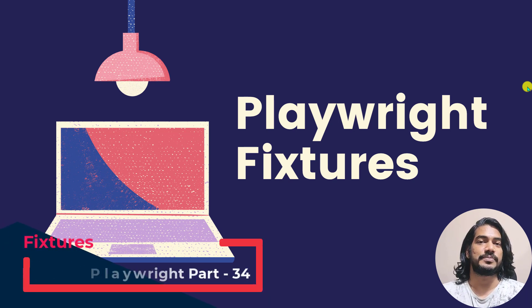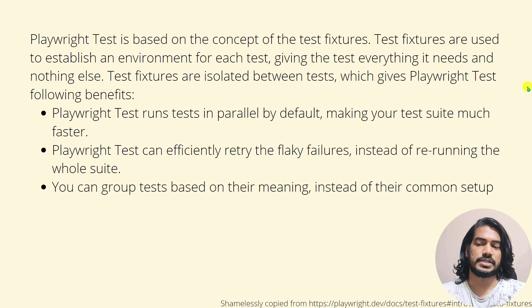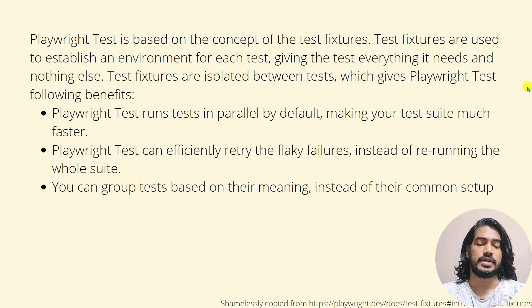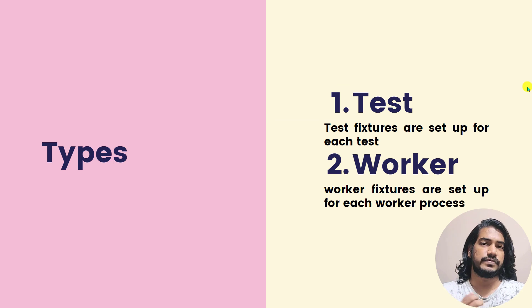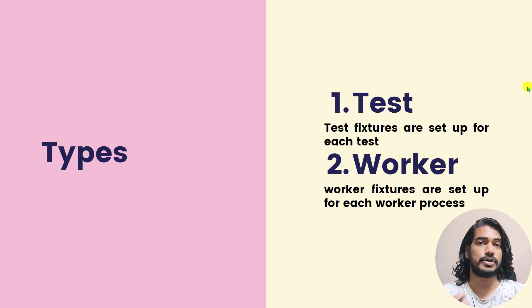Hey guys, my name is Kaushik and welcome back to LeetCode. In this video we are going to talk about a very important feature of the Playwright test runner: fixtures. There are two types of fixtures we need to remember — one is the test fixture and another is the worker fixture. In this video let's explore the test fixture, and in upcoming videos we'll explore the worker fixture.